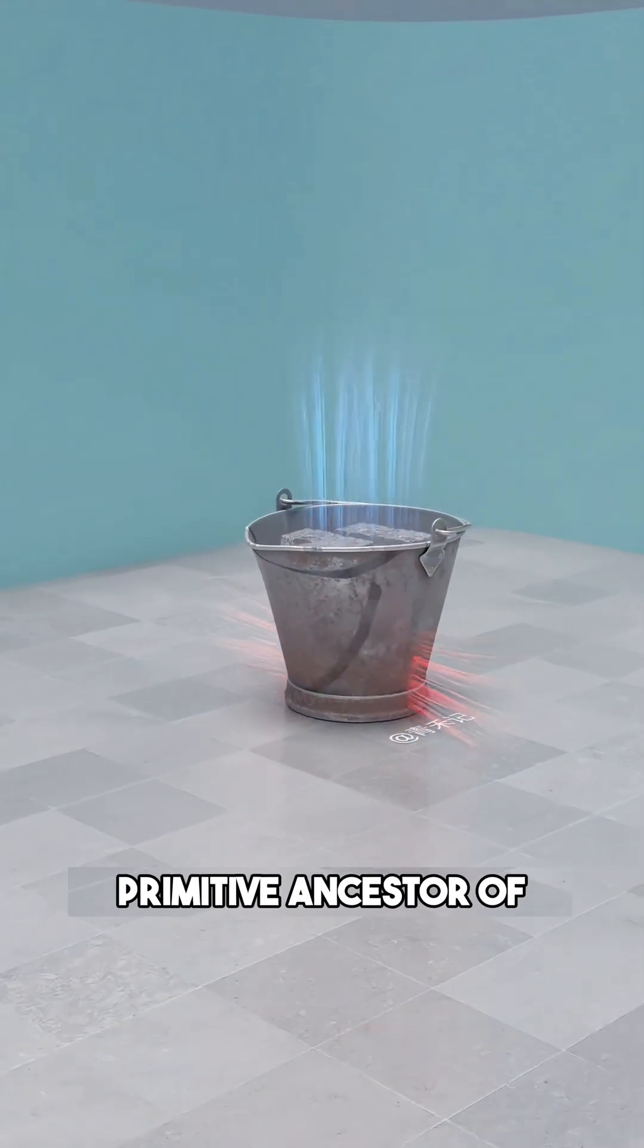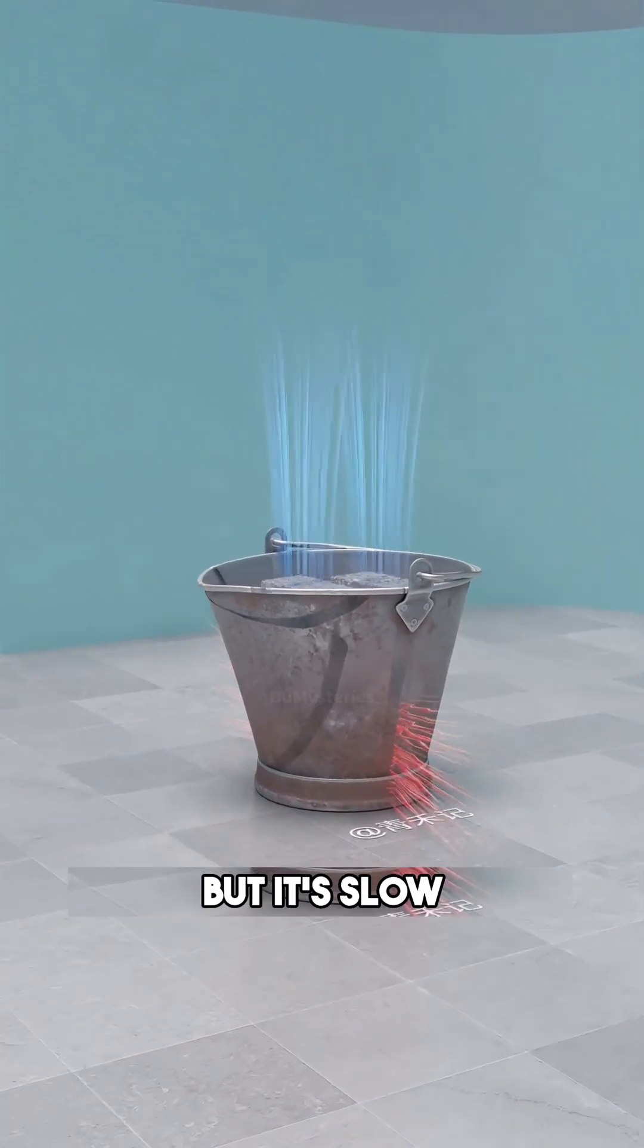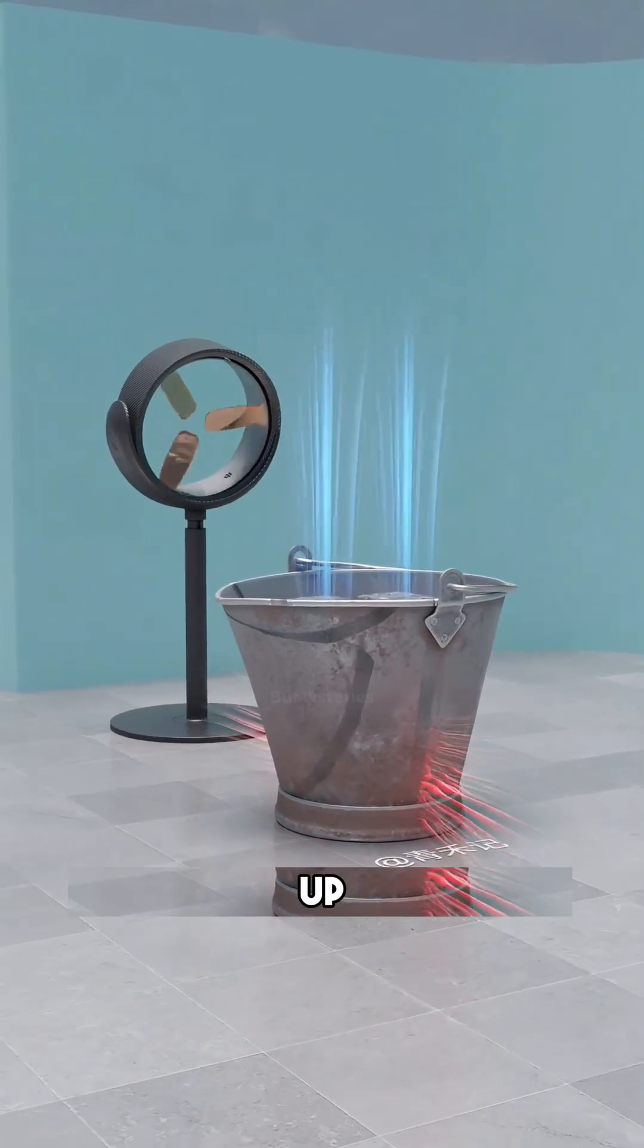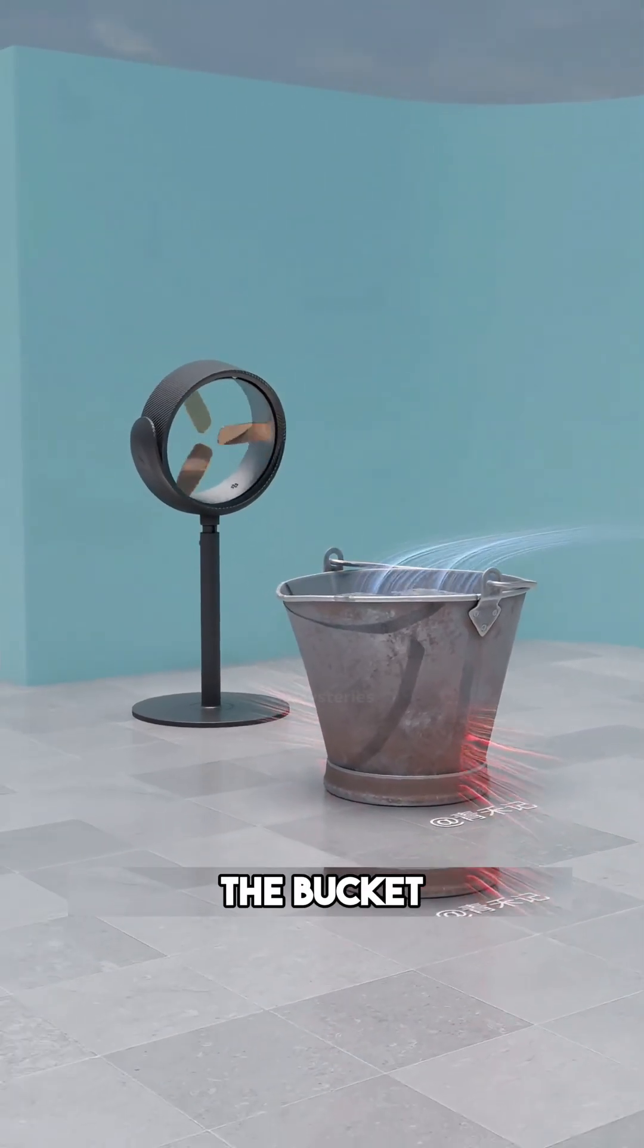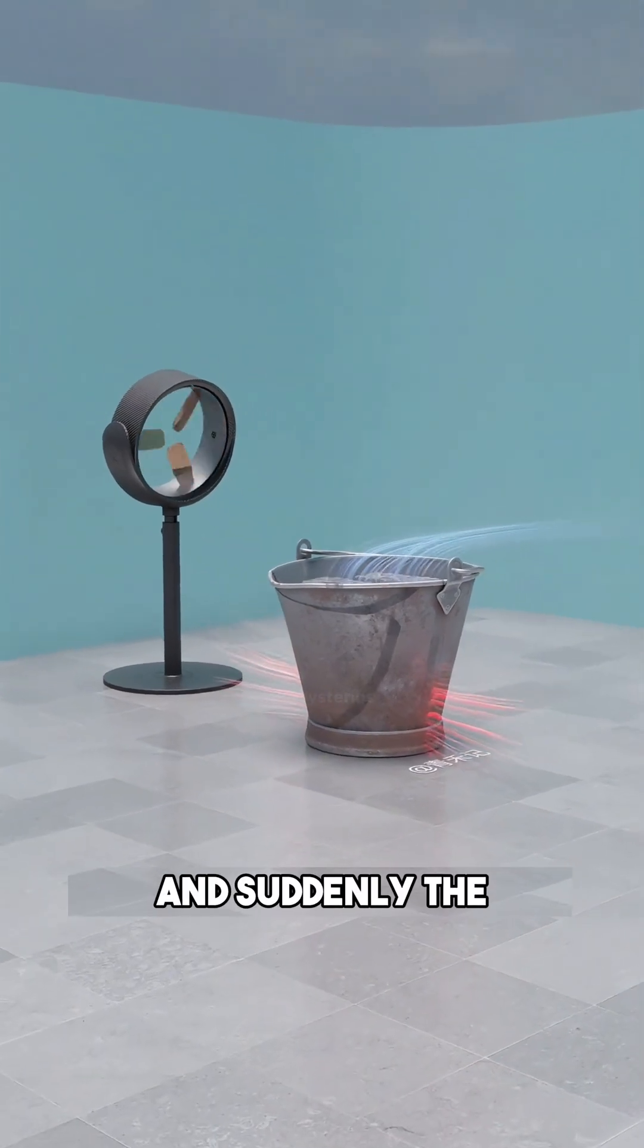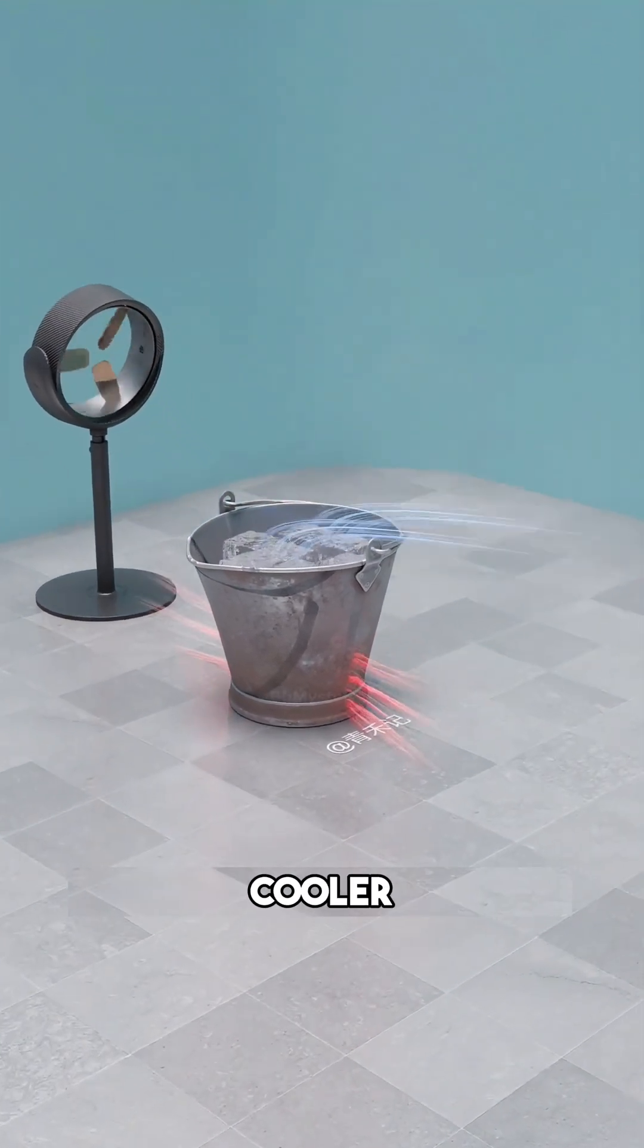This is the primitive ancestor of air conditioning, but it's slow. To speed things up, you aim an electric fan at the bucket. The airflow accelerates the melting, and suddenly, the room feels much cooler.